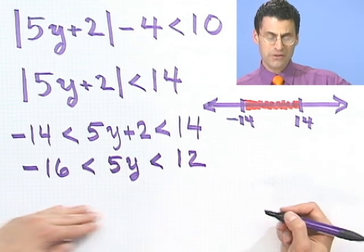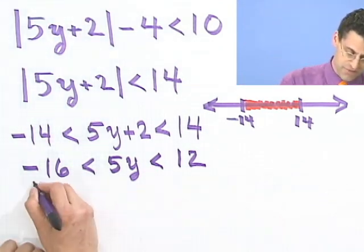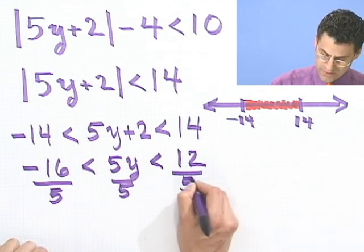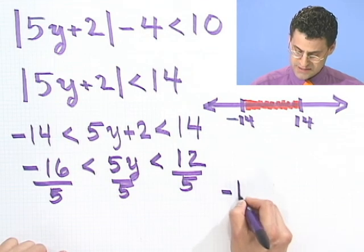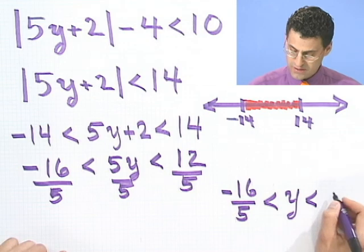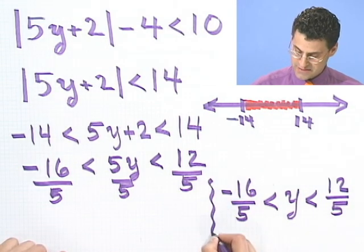Now, I divide everything through by 5. No need to flip all those inequality signs because 5 is positive. And when I do that, I see that I have minus 16 over 5 is less than y, which, in turn, is less than 12 over 5. And that's the answer.